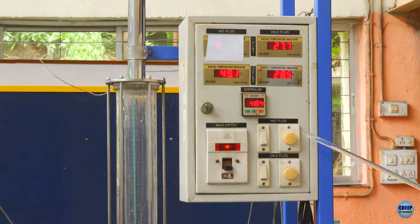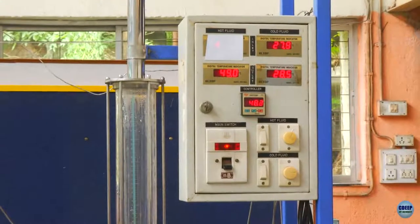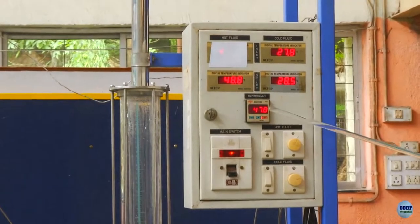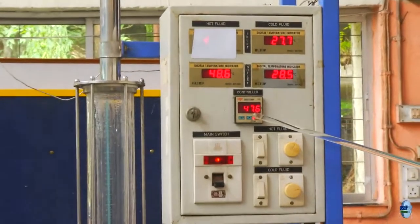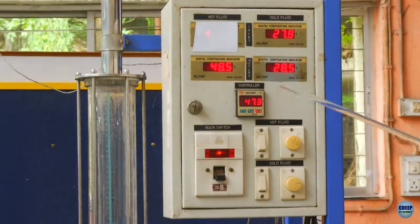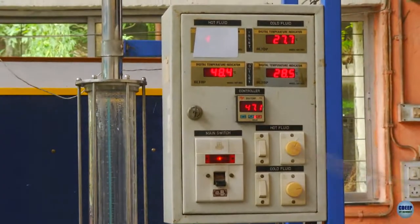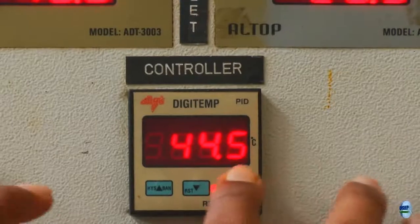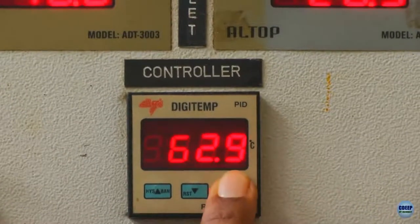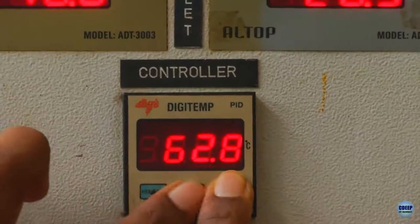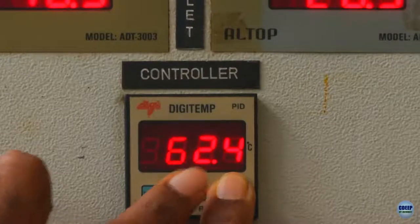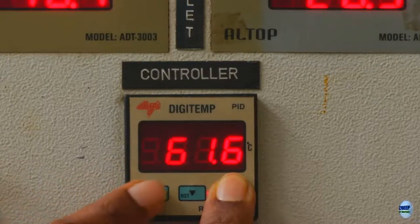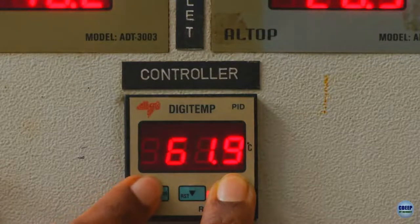Hot and cold fluid rates are two variables we can control to obtain various Reynolds numbers. The other control variable is the inlet temperature of the hot fluid. This is controlled by an on-off thermostat. The desired temperature is first set in the thermostat. The thermostat controls the reservoir's heater coil current. When the inlet temperature of the hot fluid reaches the set point, the heater current is turned off. The current is turned on again when the inlet temperature drops from the set point value.